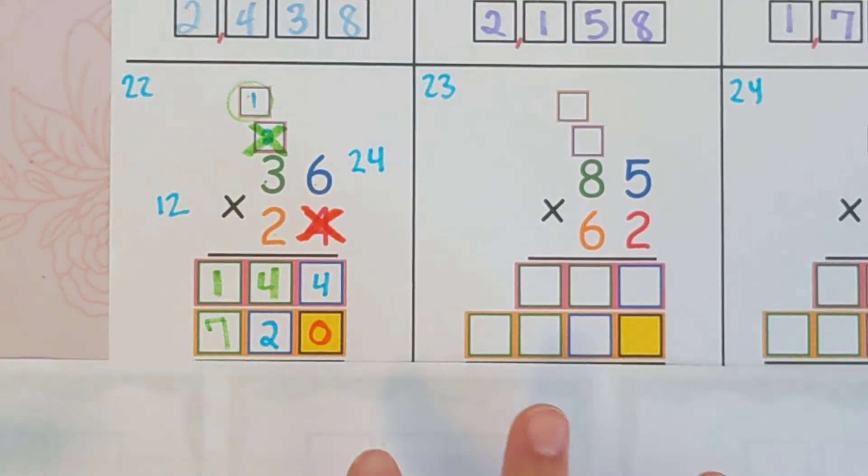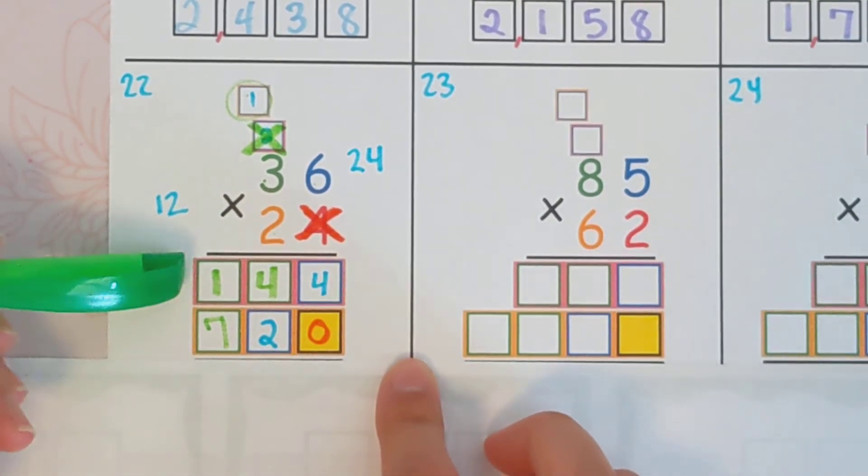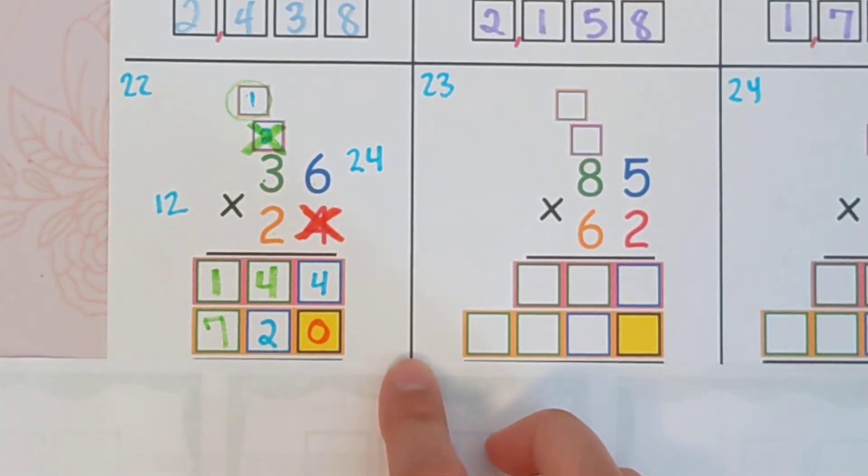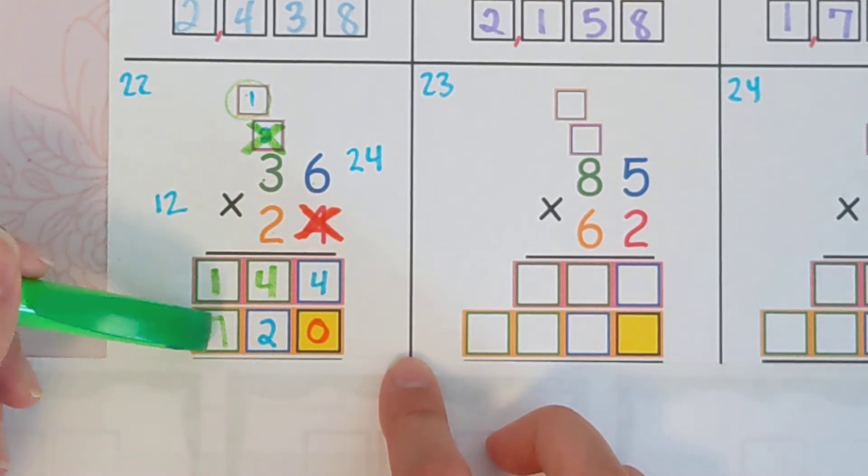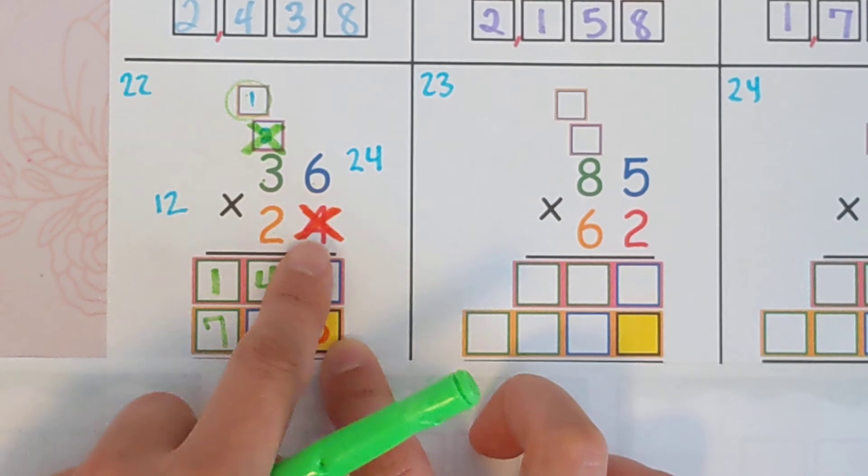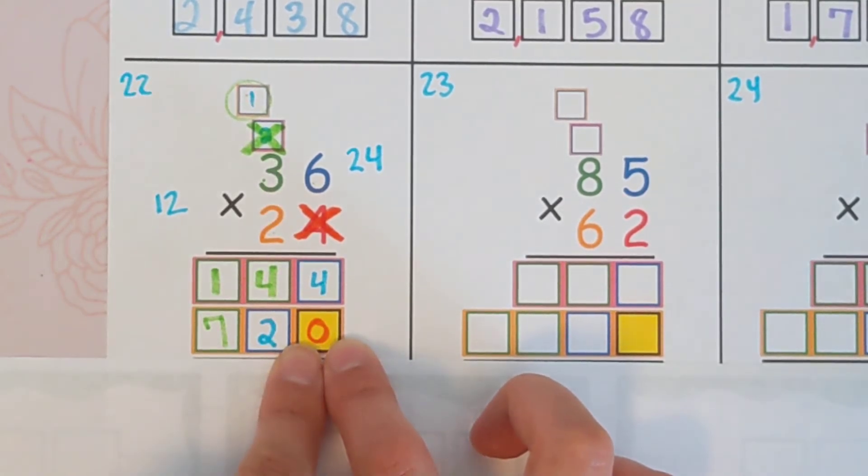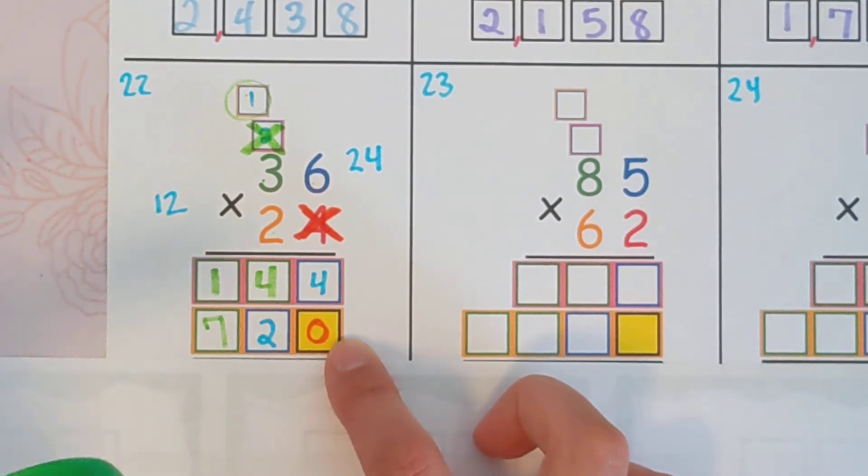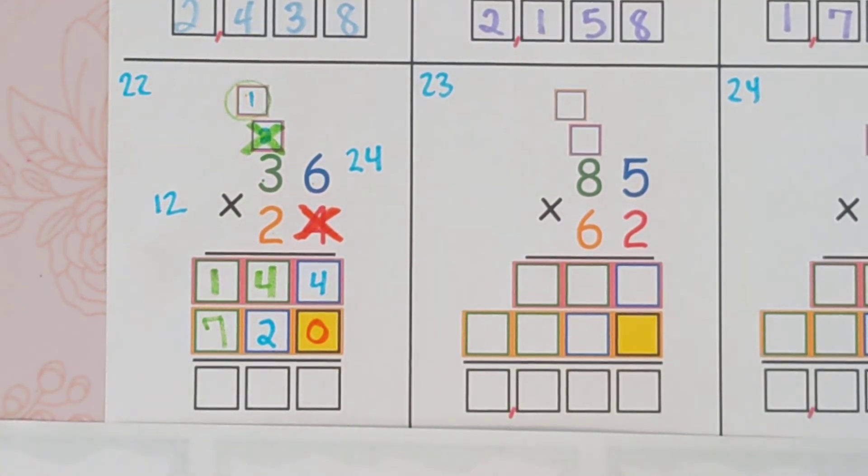Okay, so let's talk about what we have here. This top row is four times 36. This bottom row is two times 36 with the zero, 20 times 36. If you want 24 times 36, all you have to do is add these together. So we're just going to go ahead and do that. And then you're finished.